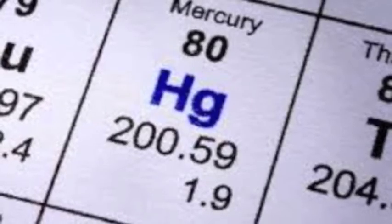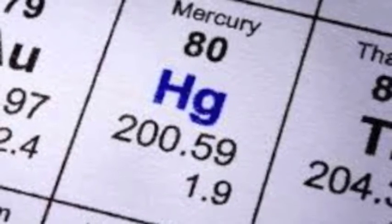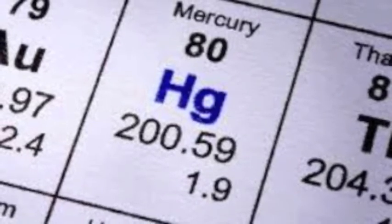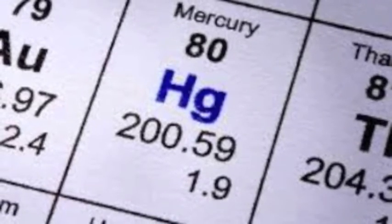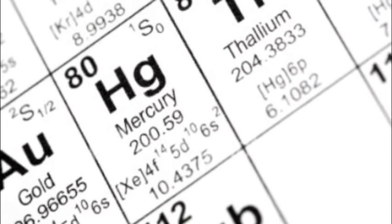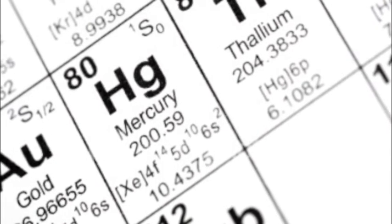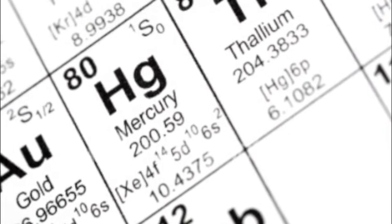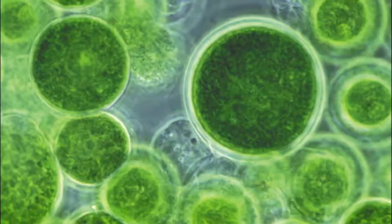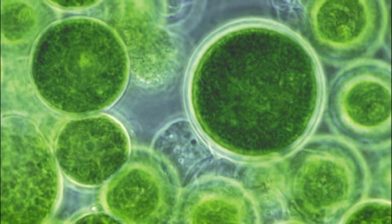Its symbol on the periodic table is Hg. Although it is not as common today, mercury has been used in thermometers. It is more commonly used in barometers, which measure atmospheric pressure. Now let's take a look at how mercury affects species below fish on the food chain.